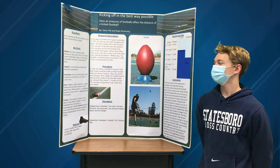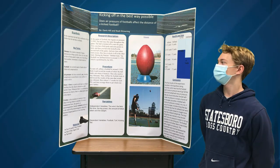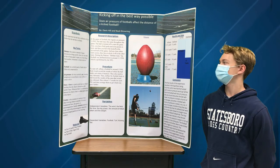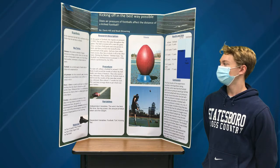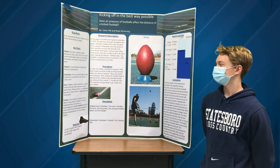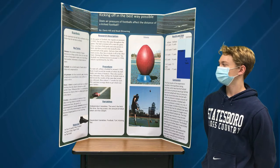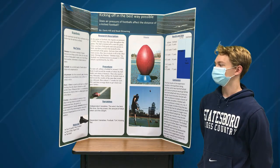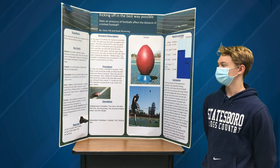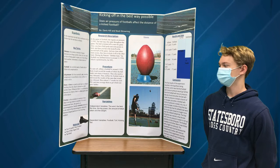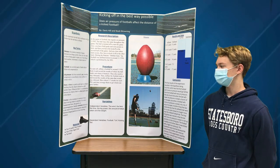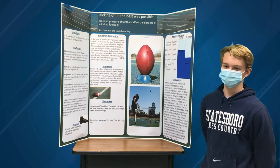Our key terms were distance, football, air pressure, force, and friction. The definition of distance is the extent or amount of space between two things, points, lines, etc. The definition of football is an oval ball made of leather that is filled with compressed air. Air pressure is the force exerted by air, whether compressed or unconfined, on any surface in contact with it. Force is a push or pull upon an object resulting from the object's interaction with another object. Friction is the resistance to motion of one object moving relative to another.